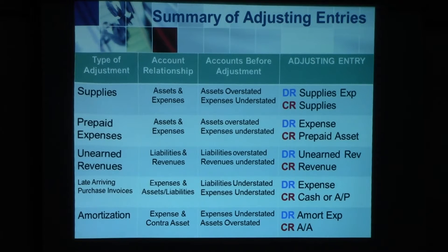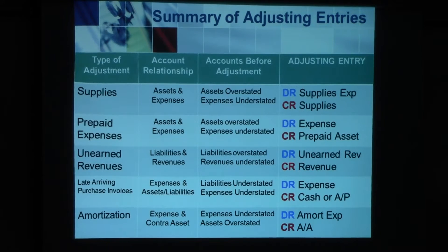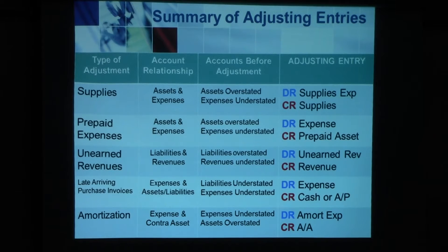Most of them have original entries as well, as you know. But as far as the adjusting entries are concerned: for supplies, you debit supplies expense and credit supplies. For pre-paid expenses, you debit the actual expense — like rent expense or insurance expense — and you credit the pre-paid asset, like pre-paid insurance or pre-paid rent. For unearned revenues, the adjusting entry is to debit unearned revenues and credit revenues.